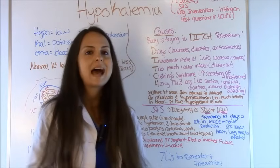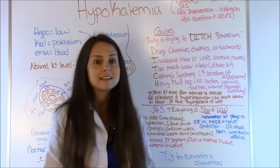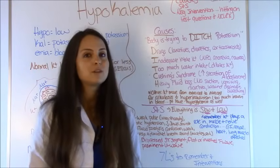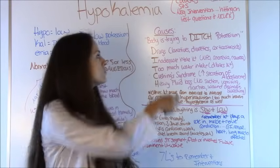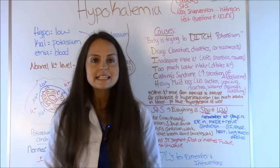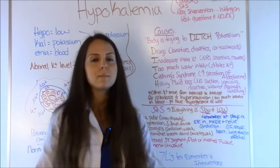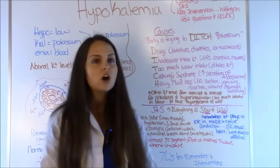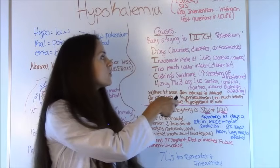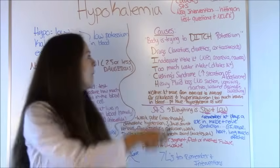Anytime you are having diarrhea, you're losing lots of potassium. Laxatives — because overuse of laxatives causes low potassium because you lose it in the stool. Diuretics like Lasix waste potassium, so the patient's urinating a lot and they're losing a lot of potassium. And corticosteroids also cause it as well.